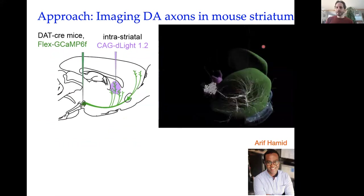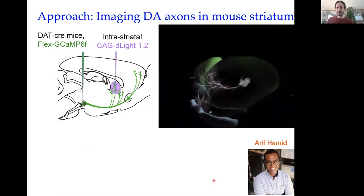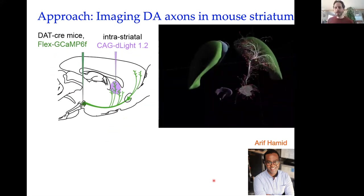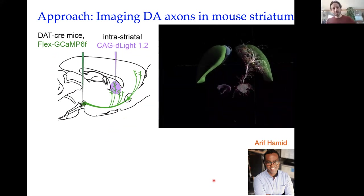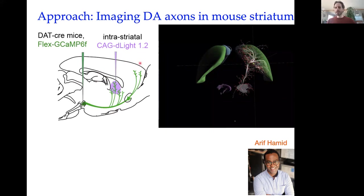All of this work was done by Arif Hamid, who is an awesome postdoc in Chris Moore's lab and my lab. He studies mice, using genetic engineering tricks to record dopamine terminal activity — either using GCaMP, which records calcium activity at the terminals of dopamine neurons, or using DLIGHT, which is a direct dopamine sensor where you can measure dopamine concentration released in the striatum in real time.